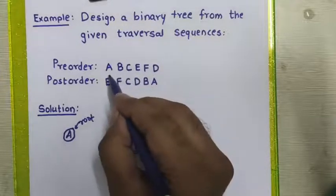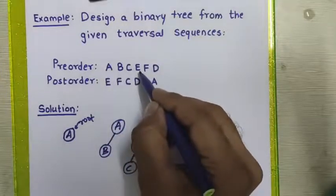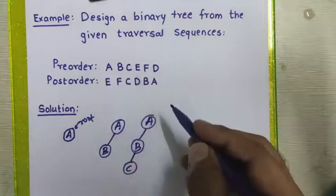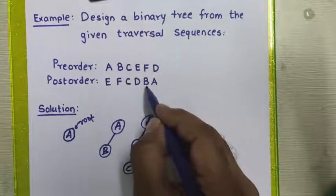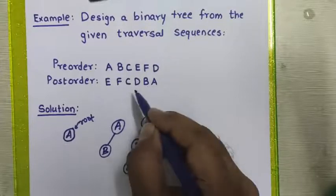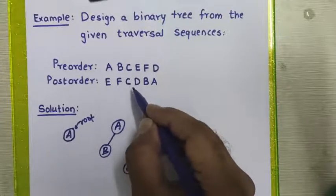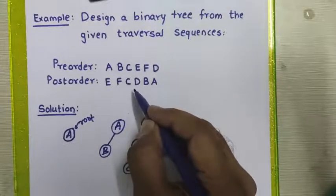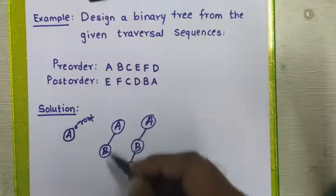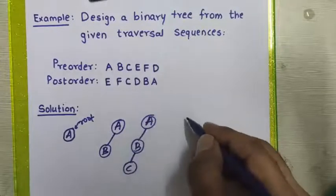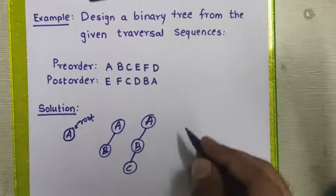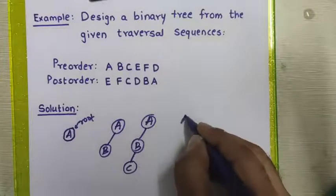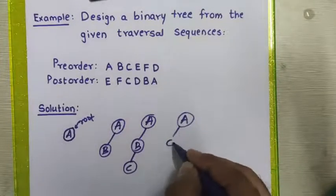We pick the next element from pre-order: node E. We check it in the post-order sequence — it appears before node A, before node B, and also before node C, meaning it is part of node C and must be placed below node C. Since node C does not have any left or right child, we place node E to the left-hand side of node C.